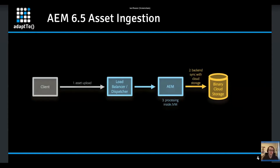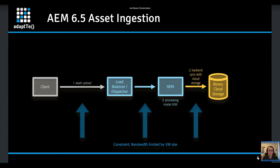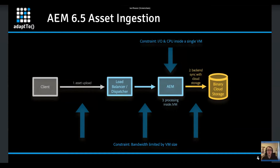Let's look at why we've made these changes. In AEM 6.5 and earlier, a client goes through a load balancer or dispatcher when uploading an asset. AEM would take those binaries, sync them to the cloud storage provider, and do all processing inside the JVM. This created constraints: bandwidth limitations based on VM size, and being limited by the IO and CPU inside that single virtual machine since all processing happened inside the JVM.